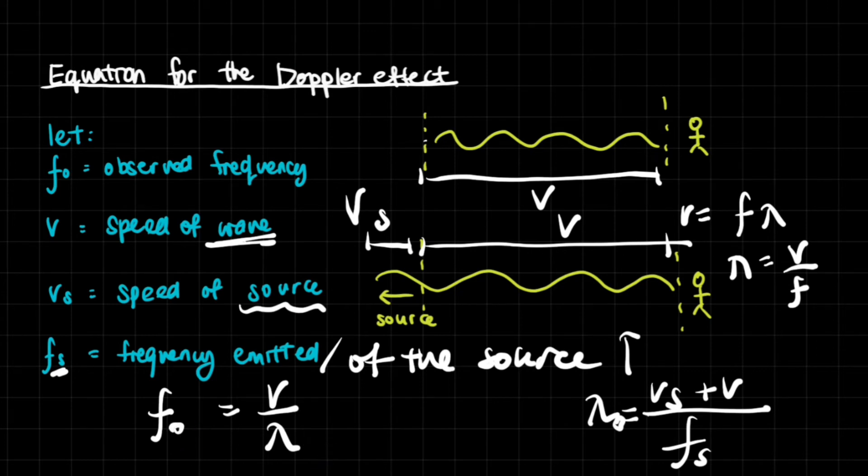So now the V has changed to V_S plus V over frequency. And do note that this is the frequency of the source. So we know that the observed frequency is going to be given by frequency equals V over lambda.